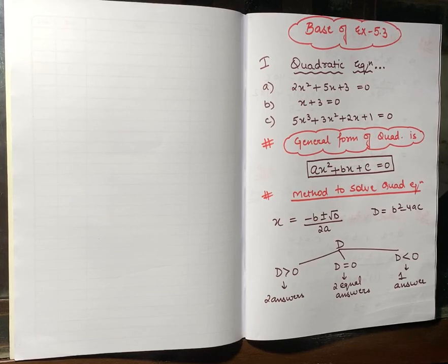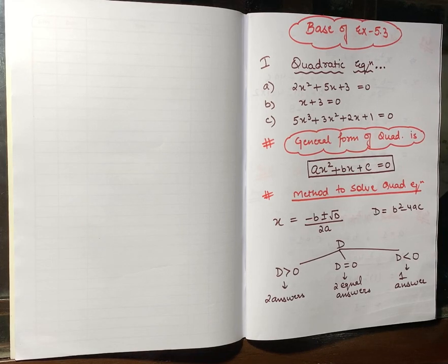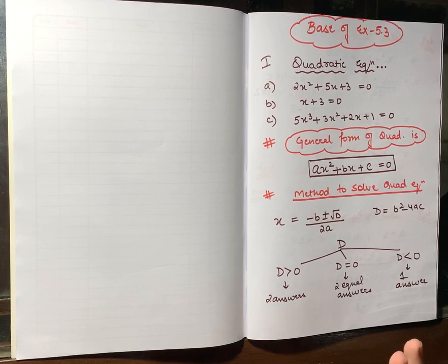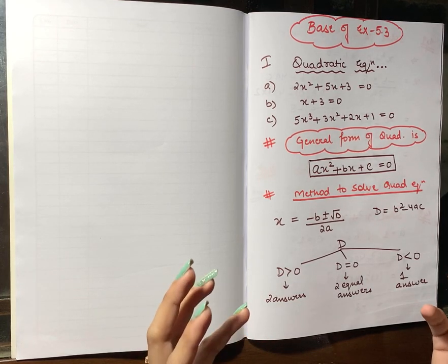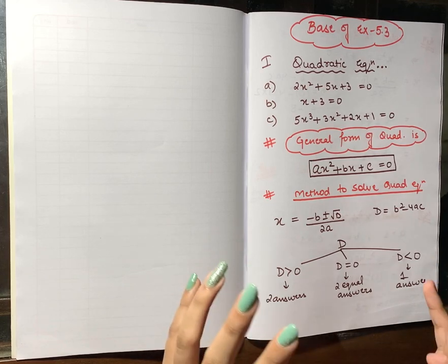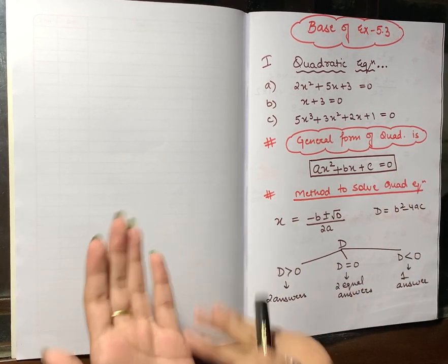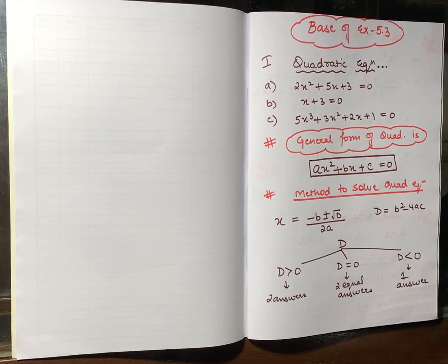Hello guys, welcome back to my YouTube channel Standout Classes. Today I am going to start with the base of Exercise 5.3. In the previous video I completely discussed Exercise 5.2, in which we learnt polar representation of a complex number. The next exercise is a concept you have done before — it is very simple and not tough.